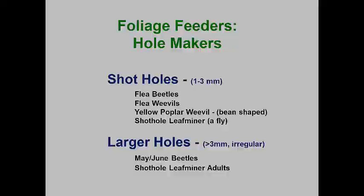Flea weevils and flea beetles are small insects that have the hind legs enlarged for jumping. The beetles often jump off of their host plant if disturbed or they see you coming, so the adults can often be missed. Most of the flea weevils have larvae that are leaf miners, while the leaf beetles have elongate larvae that usually feed on plant roots.